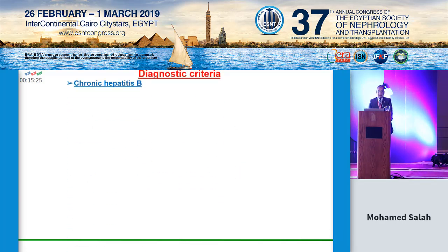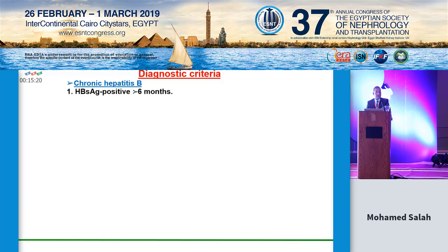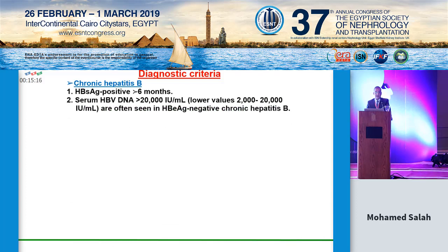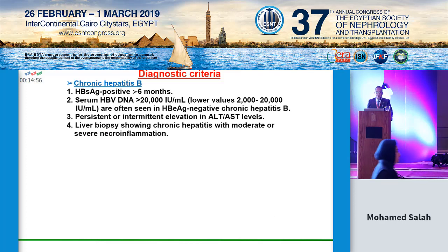What are the diagnostic criteria for chronic hepatitis B? You should have hepatitis B surface antigen positive for about six months. Serum hepatitis B virus DNA above 20,000 international units; levels between 2,000 and 20,000 are often seen in hepatitis B E antigen-negative chronic hepatitis B. There is persistent or intermittent elevation in transaminases, and liver biopsy shows chronic hepatitis with moderate or severe necroinflammation.